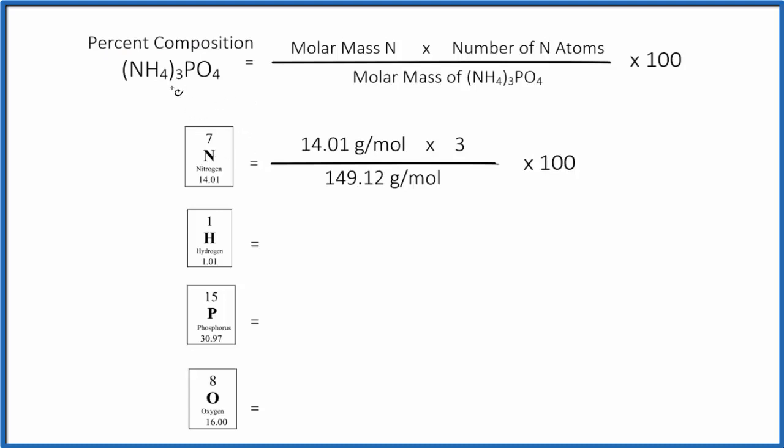To find the percent composition for the nitrogen here in this ammonium phosphate, we find the molar mass of nitrogen. That's right here on the periodic table, also called atomic mass, 14.01 grams per mole. We multiply that by the number of nitrogen atoms. We have one, but this three goes to everything in the parentheses. Three times one, that gives us three nitrogen atoms right here.